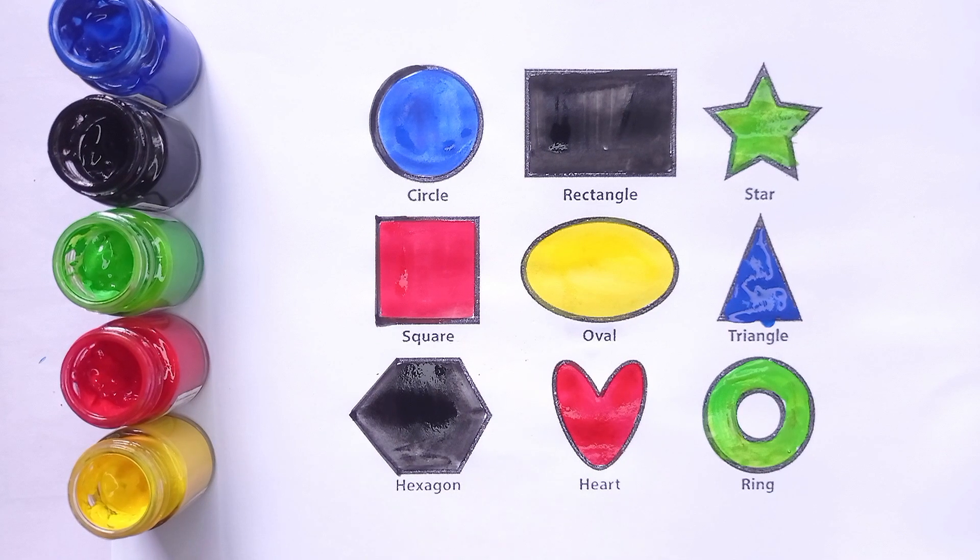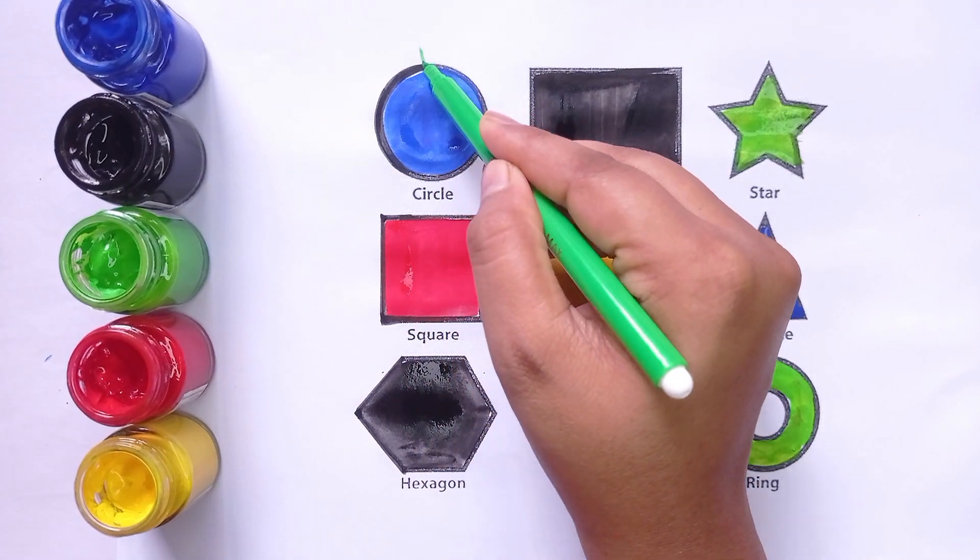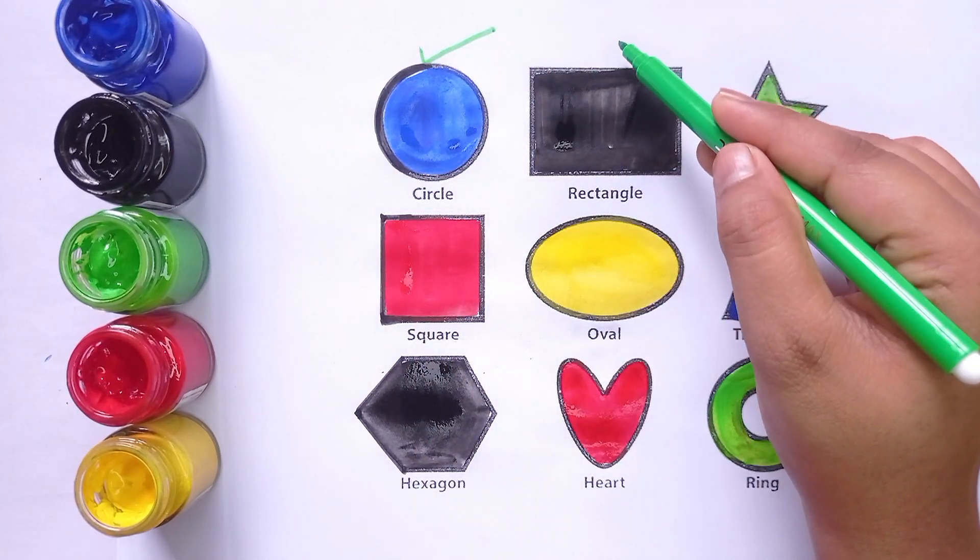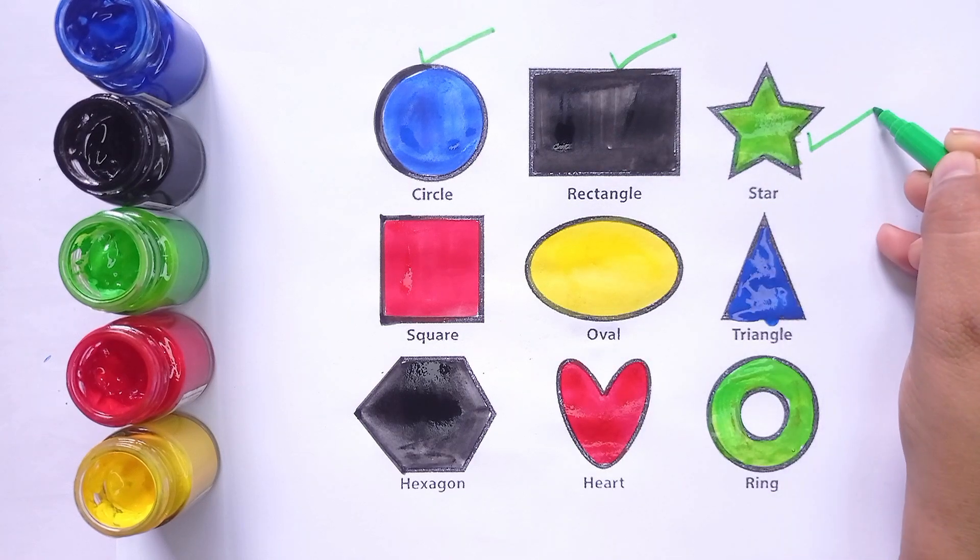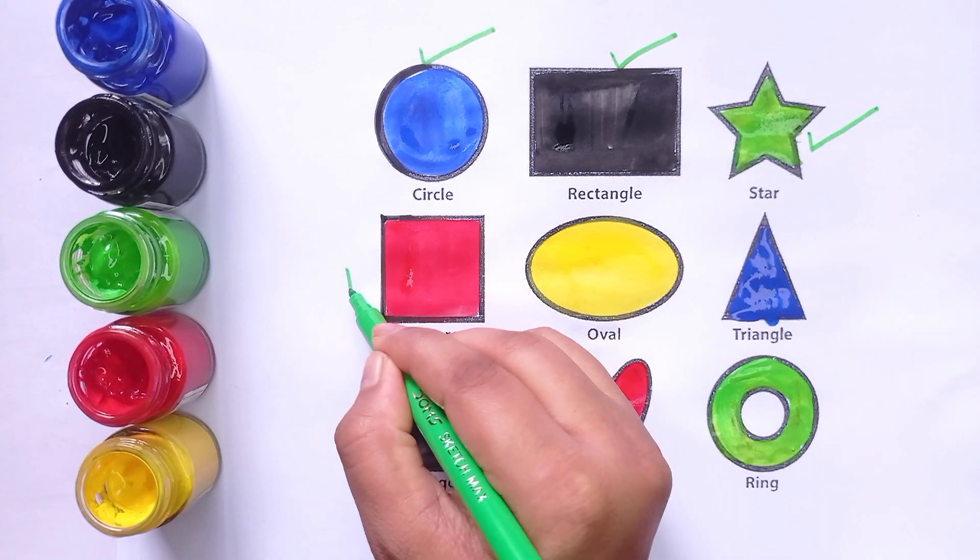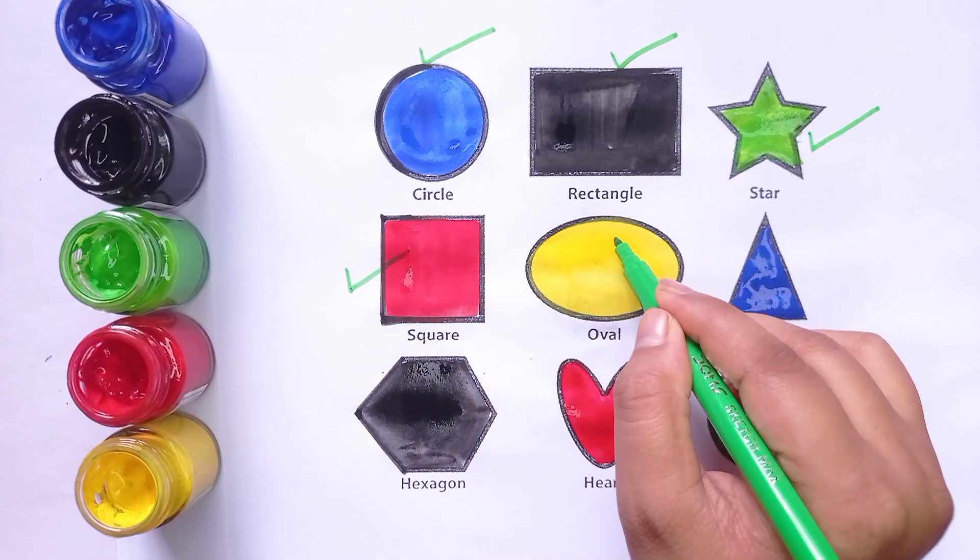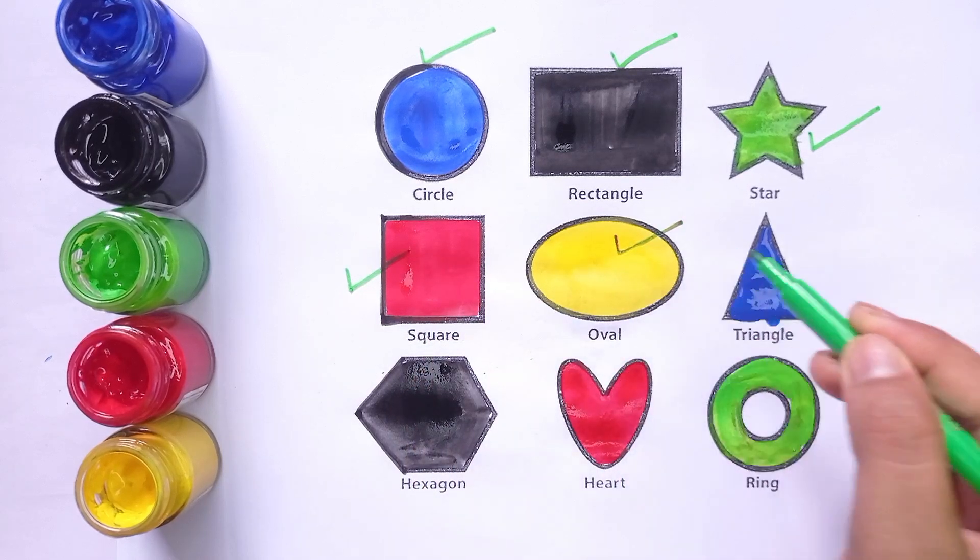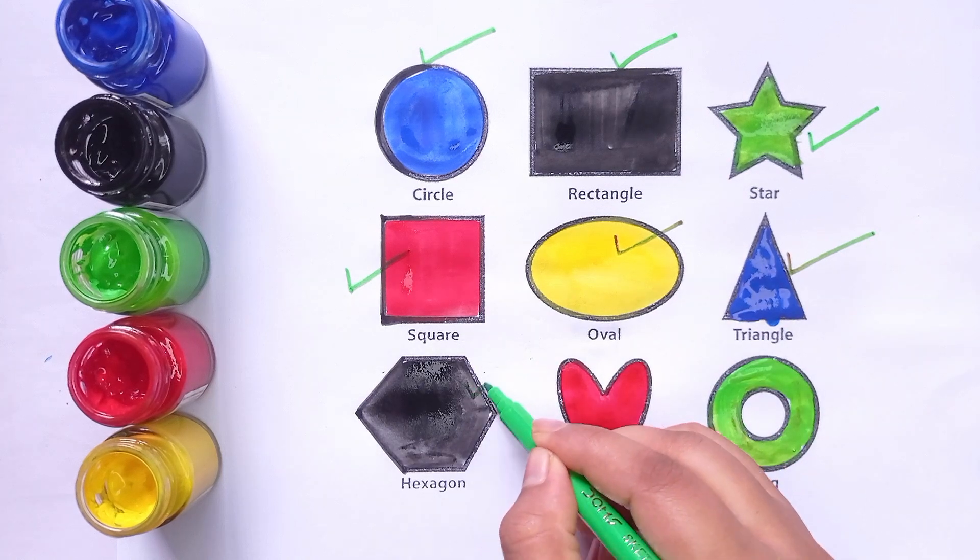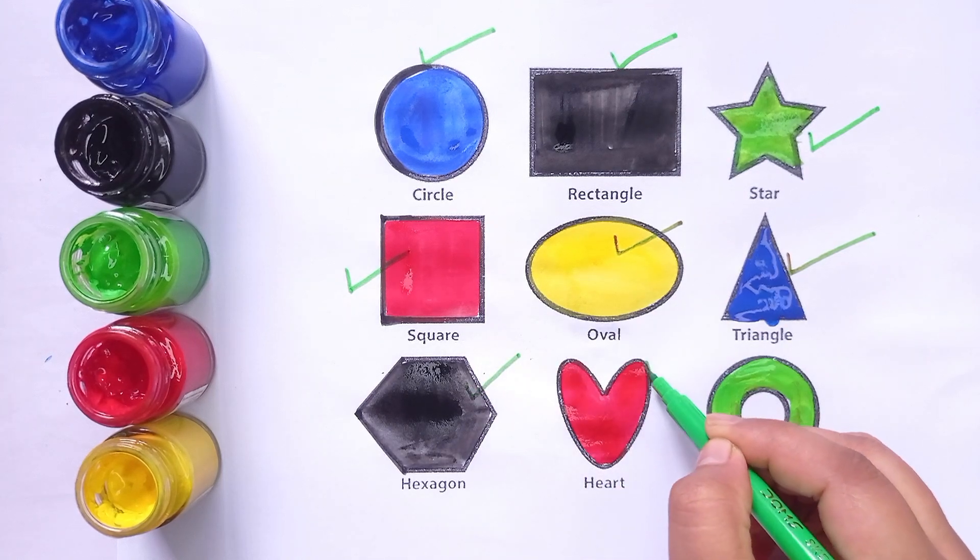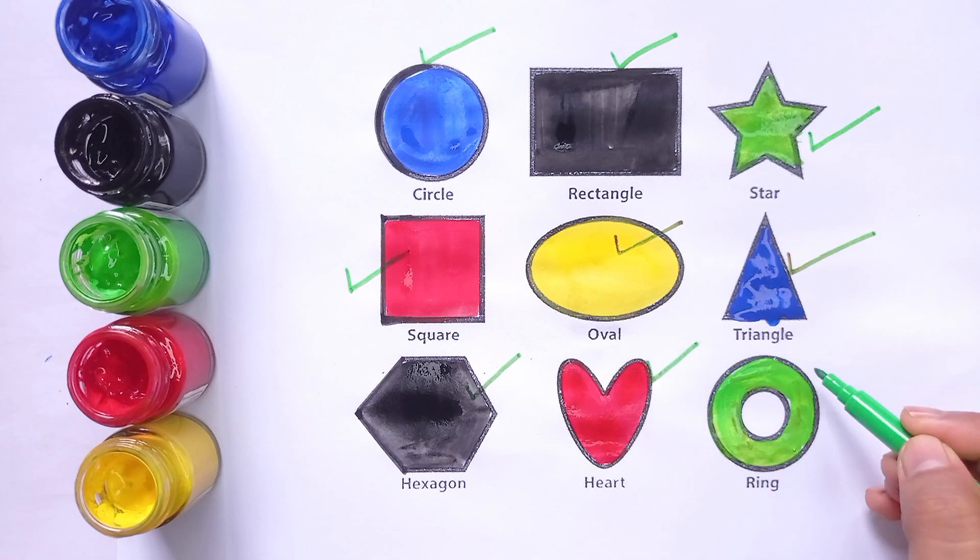This is circle. Rectangle. Star. Square. Oval. Triangle. Hexagon. Heart. And ring.